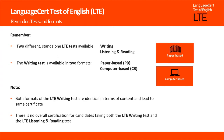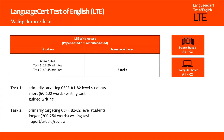What also needs to be clarified is that there's no overall certification for candidates taking both the LTE writing test and the LTE listening and reading test. Now let's look at the structure of the LTE writing test and the duration of the writing tasks. Candidates are required to complete two writing tasks, both of them being mandatory. They are given 60 minutes for both writing tasks. The first task takes approximately 15 to 20 minutes to complete and the second one approximately 40 to 45 minutes.